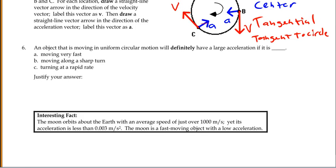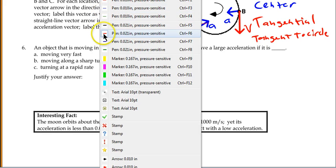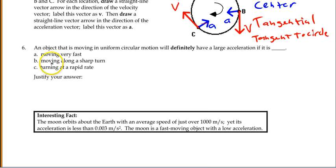Okay, and finally, we'll look at the conditions that are required to definitely have a large acceleration. Now, to have a large acceleration, we have to be changing our direction at a quick pace, rapidly. So, the one piece here that will actually, definitely, for sure work is turning at a rapid rate.